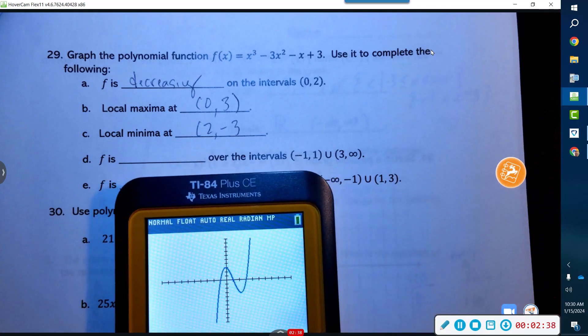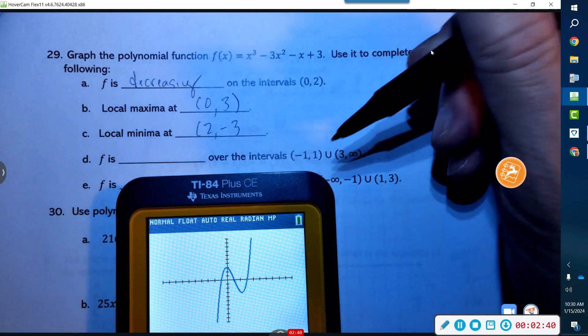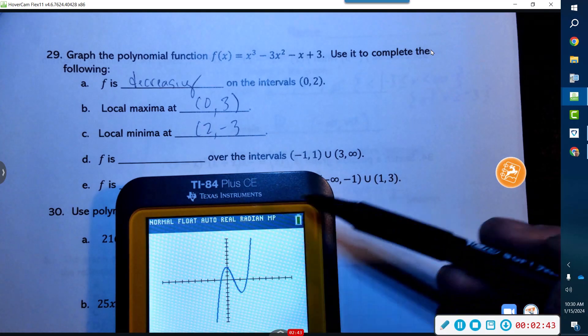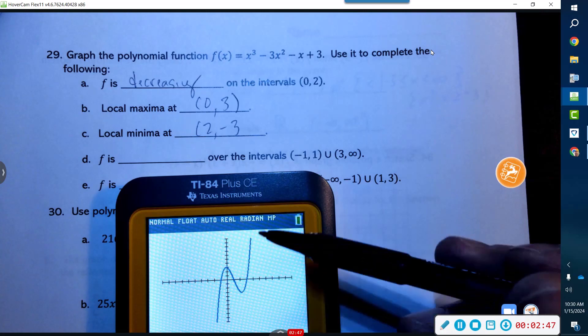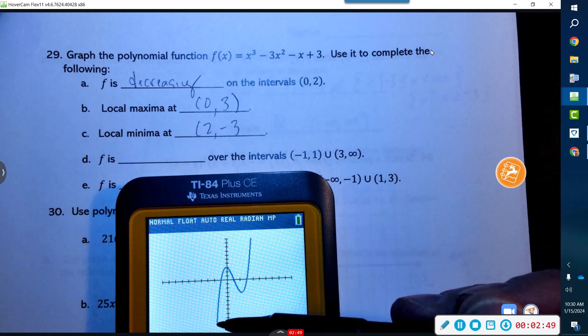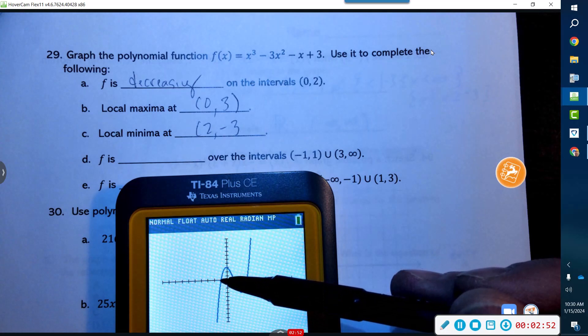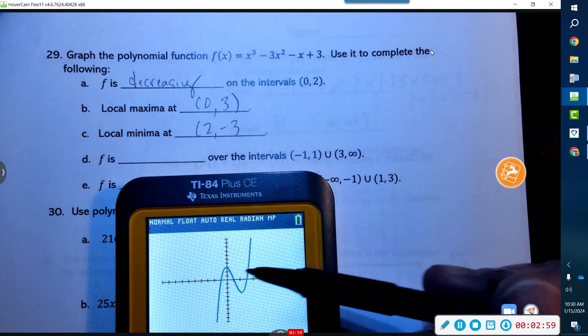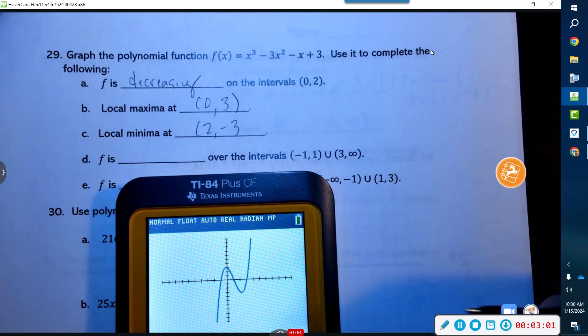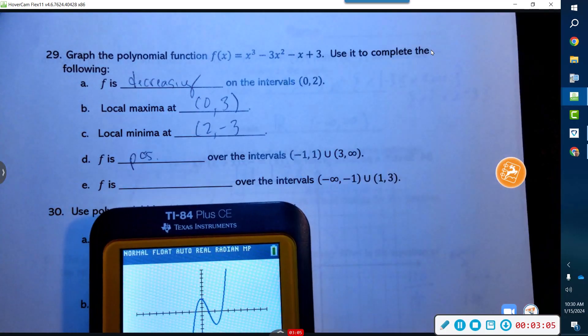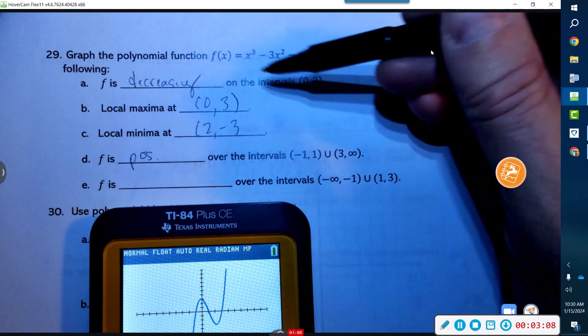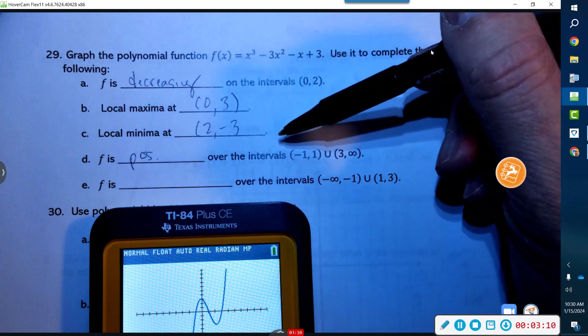Now what's happening from -1 to 1 and then from 3 to infinity? What is he doing from -1 to 1 and 3 to infinity? It looks like what they both have in common is that they are positive.